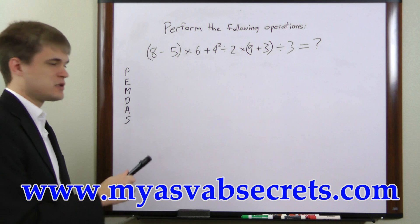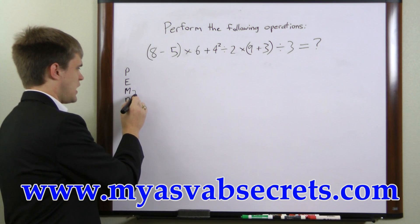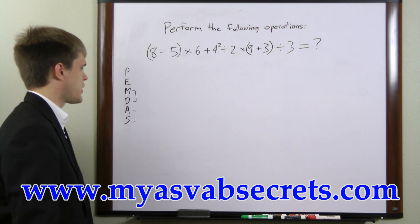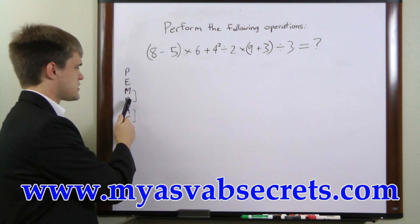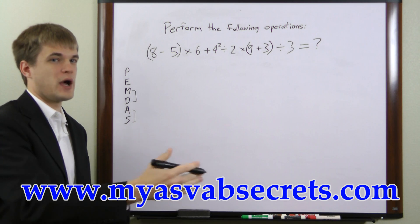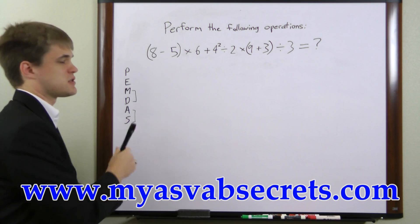Now the important thing to understand with PEMDAS is that multiplication and division have the same priority level and addition and subtraction have the same priority level. If you have a string of operations that have both multiplication and division, you work the multiplication and division from left to right in whatever order they happen to come. And it's the same thing with addition and subtraction.